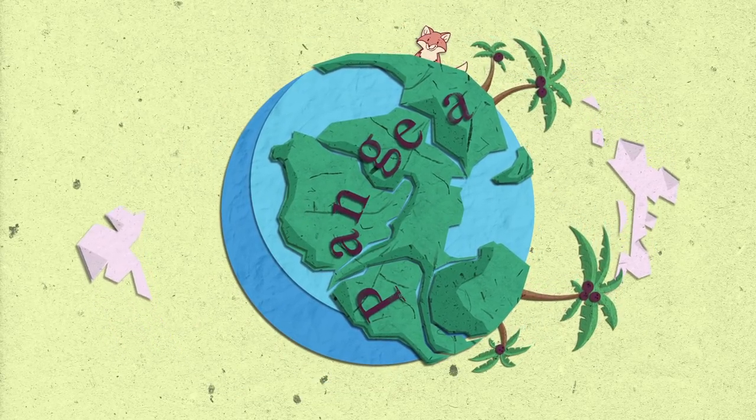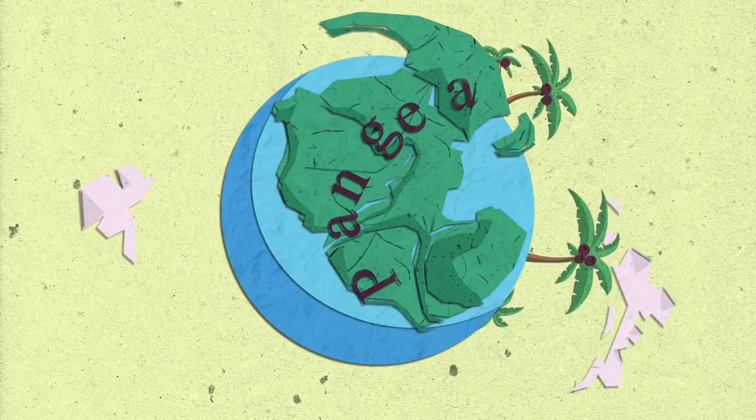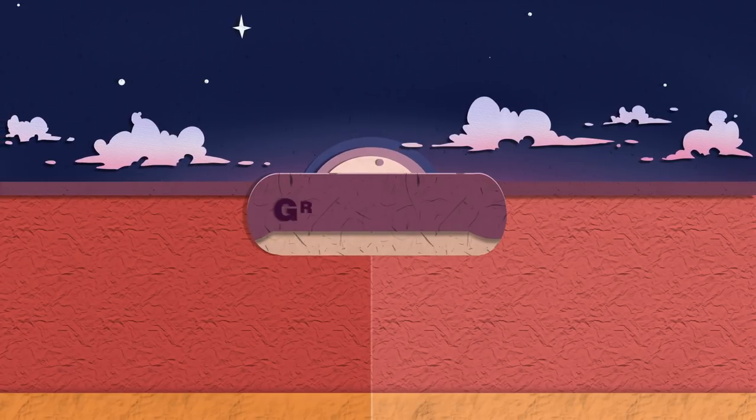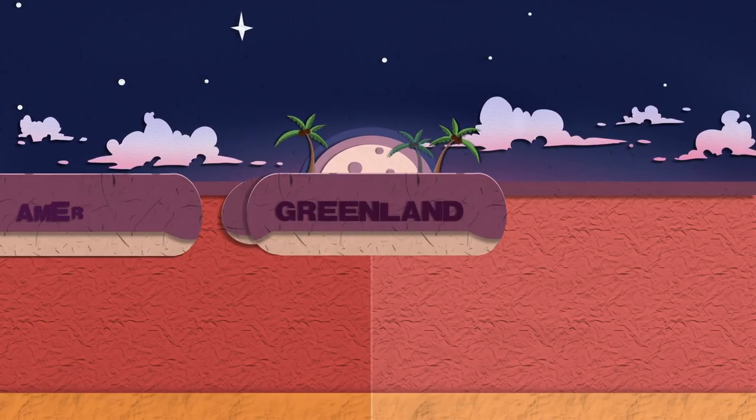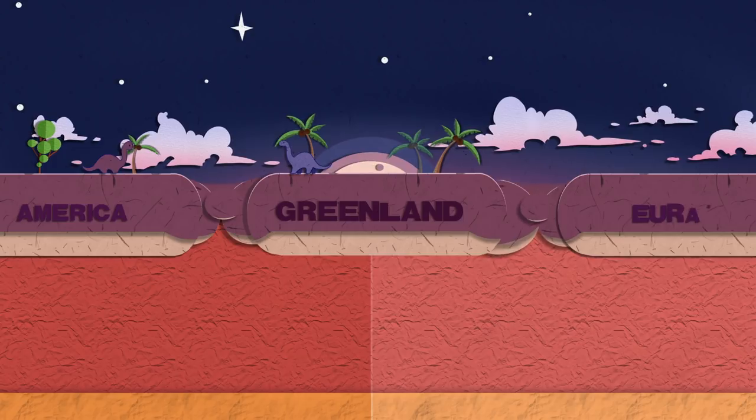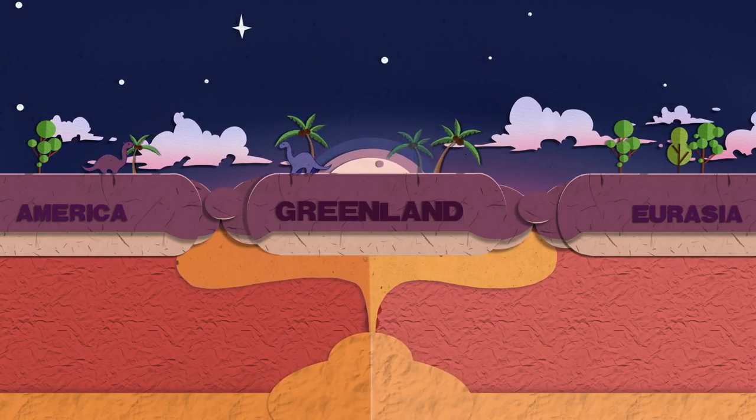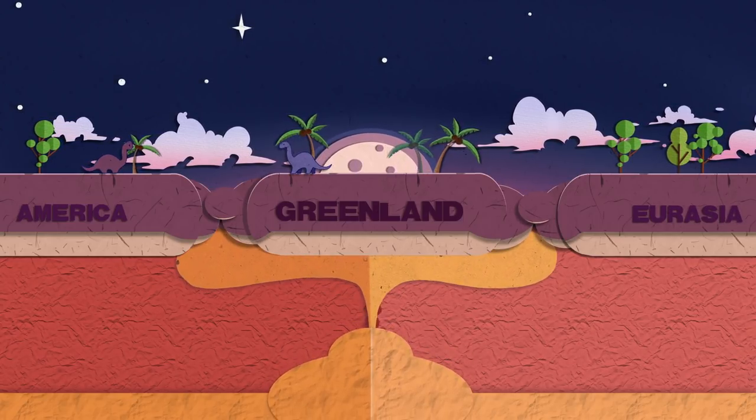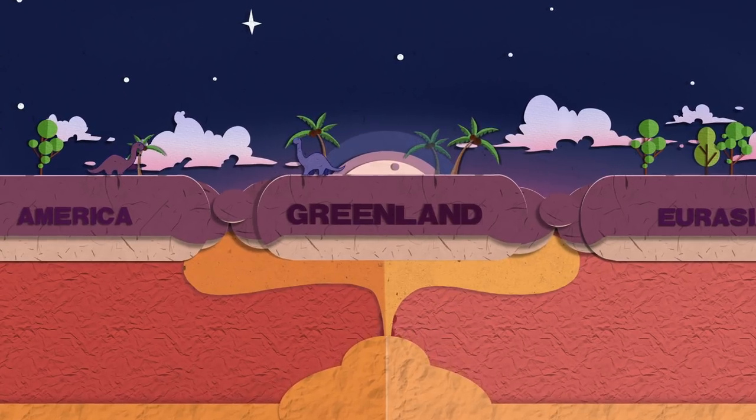As land on earth was still Pangea, parts of the crust were thicker than others. If we say this is Greenland, this is America and this is Eurasia, we can picture a hot spot hitting Greenland and then spreading out and rising to the thinner lithosphere, accumulating there.